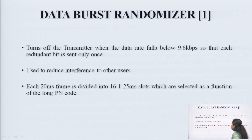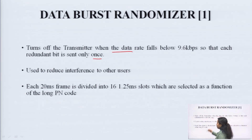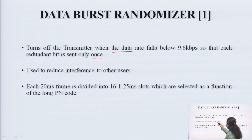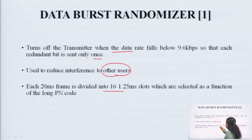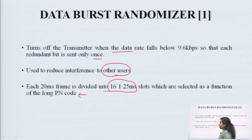The data burst randomizer turns off the transmitter when the data rate falls below 9.6 kbps, so that each redundant bit is sent only once. It is used to reduce interference to other users. Each 20 ms frame is divided into 16 slots of 1.25 ms each, selected as a function of the long PN sequence.